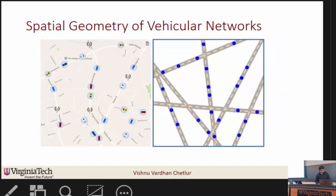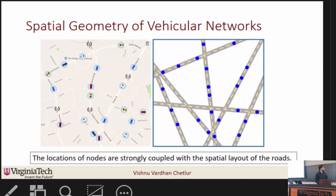Looking at another illustration using a map of Blacksburg, once again the roads and vehicles located on them can be abstracted as shown. The message here is this: the locations of nodes are strongly coupled with the underlying infrastructure, that is the spatial layout of the roads. In order to suitably model a vehicular network, we need to model the locations of nodes, which are dependent on the spatial layout of the roads. There is a need to model both the spatial layout of the roads as well as the nodes located on them.